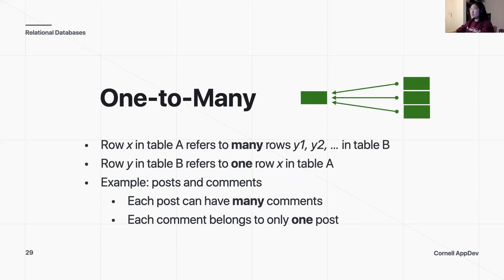Next we have one-to-many relationships. As the name implies, one row X in table A refers to many rows in table B, but one row in table B can only refer to one row X in table A. This is the classic we've seen in previous demos with posts and comments — each post can have a ton of comments, but each comment can only belong to one post. You can't have one comment appear on multiple posts.